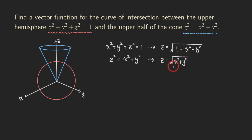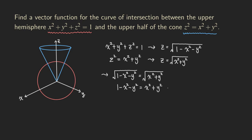Since we have done this, we set them equal: √(1 − X² − Y²) = √(X² + Y²). Squaring both sides gives 1 − X² − Y² = X² + Y². Moving X² and Y² to the other side: 1 = 2X² + 2Y². Dividing both sides by two, we get X² + Y² = 1/2.